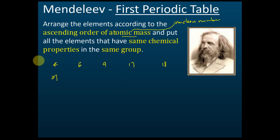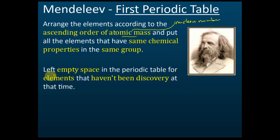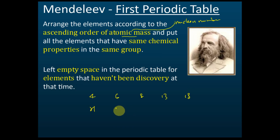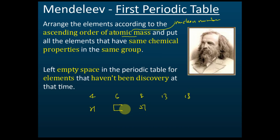He left empty spaces in the periodic table for elements that hadn't been discovered yet. For example, if the sequence went 4, 6, 8, 13, 18, 21, and then 27 — and element 27's chemical properties didn't match the group — he moved it to the next group and left an empty space, realizing there were elements not yet found at his time.